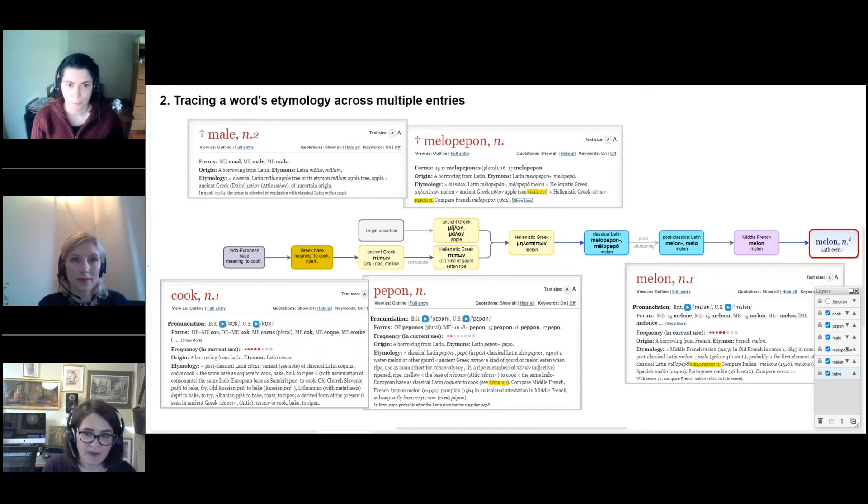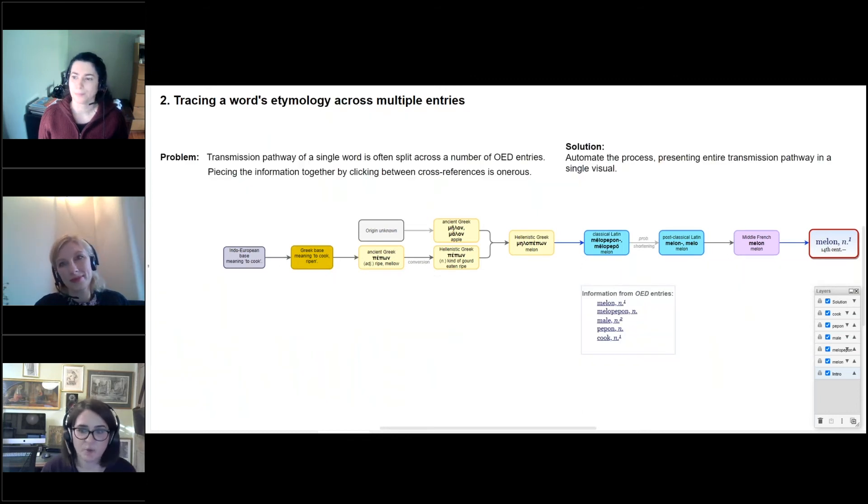A tool designed to generate transmission maps of the kind that we saw at Spirit should be able to do a lot of this legwork for you by automating the process of entry hopping to join all the relevant information together and then presenting the word's entire transmission pathway in a single visual. If a user were keen to know more detail, then this would still be available in the full etymology text of the individual entries, which I've linked in the box here. But a visual could be a useful way to save time and effort in this sort of situation, synthesizing actually quite a large amount of information and presenting, I think, a useful overview.